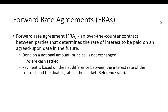A forward rate agreement, or FRA, is an over-the-counter contract between parties that determines the rate of interest to be paid on an agreed-upon date in the future. This is done on a notional amount, meaning the principal is not exchanged. We set some amount — a million, ten million, a hundred million dollars — and then cash settle based on the difference between those rates. FRAs are cash settled, and payment is based on the net difference between the interest rate of the contract and the floating rate in the market, usually LIBOR, but it can be some other reference rate.